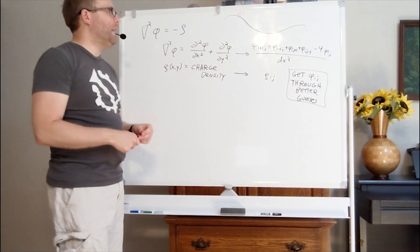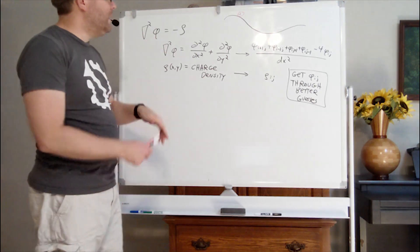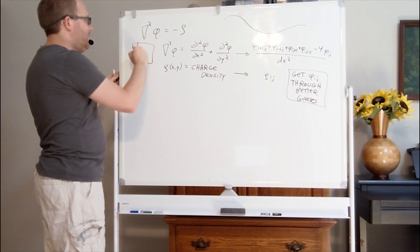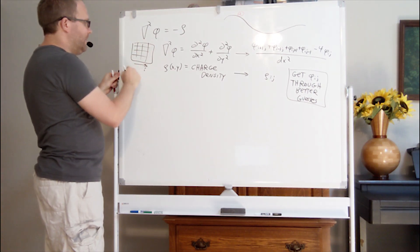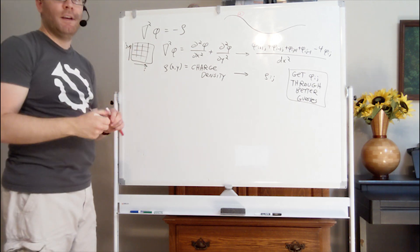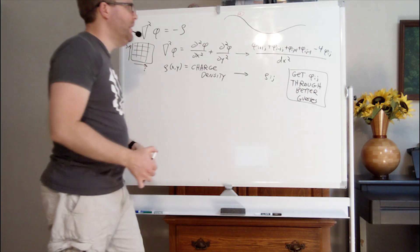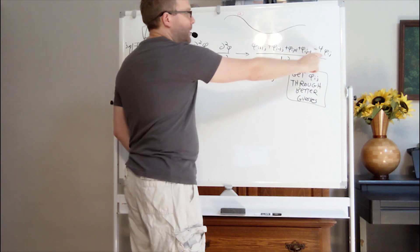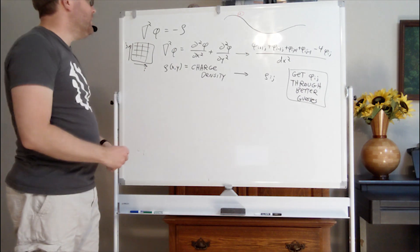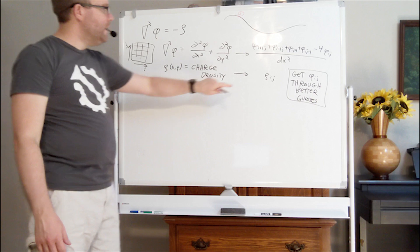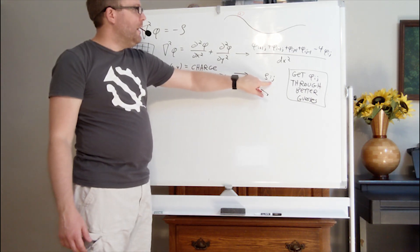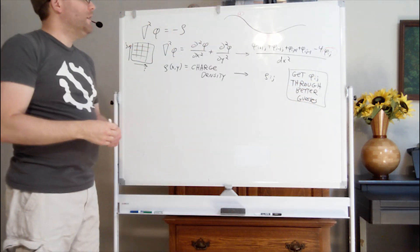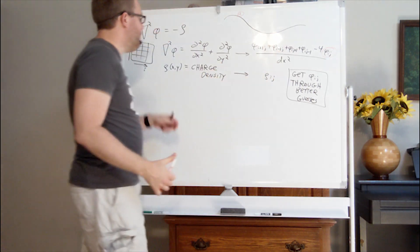The way we feed this into the computer is using finite differences. The Laplacian of phi gets transformed into a construction where phi is mapped onto a grid. We move i as the label along the x axis and j as the label along the y axis. To represent Laplace's equation we need the point to the right, left, above, below, and in the middle — that's how you represent a second derivative in the finite difference scheme. The charge density becomes a matrix of values with a different value at each coordinate i, j. We solve for phi_ij by making successively better guesses at the values everywhere inside the grid.